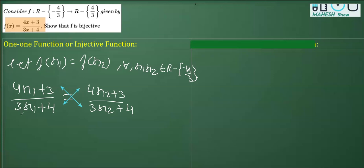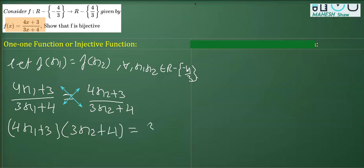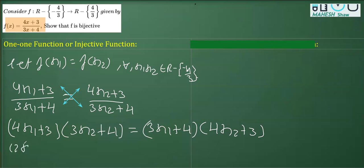So we'll be writing: (4x₁ + 3)(3x₂ + 4) = (3x₁ + 4)(4x₂ + 3). Now if I open these brackets applying the distributive property, we'll get 12x₁x₂ + 16x₁ + 9x₂ + 12 on the left-hand side.